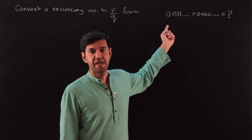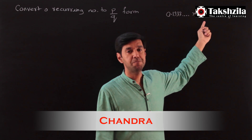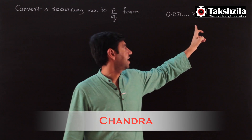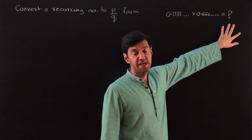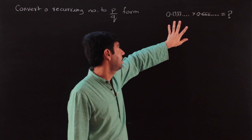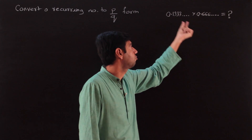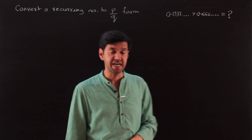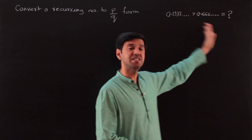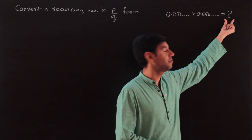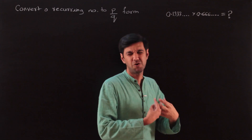Say we want to do a multiplication of the type 0.13333... multiplied with 0.6666..., again a recurring number, and I want an exact answer — there should not be any approximation. Some people will say the threes are indefinite, we cannot handle it, so let's just take two threes and two sixes. But that approximation ruins the calculation — it ruins the beauty of the answer and makes things more difficult.